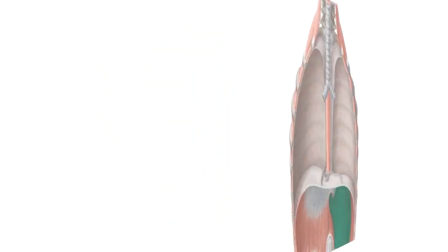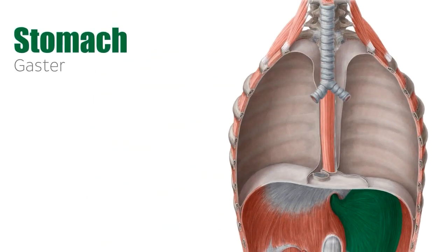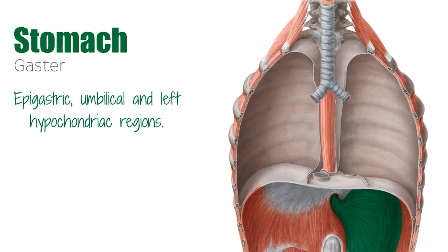As you probably know, the stomach is the most dilated part of the gastrointestinal tract and takes on a short J shape. You can also see a bit of the stomach here on this image, highlighted in green. The stomach is positioned between the esophagus, which you see here on this image, and also the small intestine. The stomach is found in the epigastric, umbilical, and left hypochondriac regions of the abdomen.